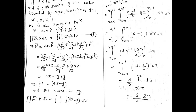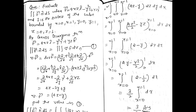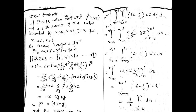Next step: put all values into the theorem equation. The limit of x is 0 to 1, limit of y is 0 to 1, limit of z is 0 to 1. Your dV will be written with the innermost integral first. The limit of z is innermost, then y from 0 to 1, then x from 0 to 1 as the outer integration.